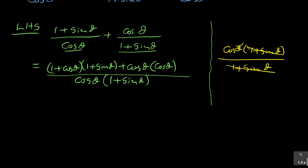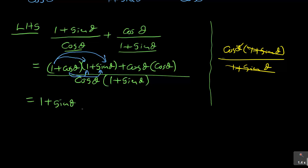You continue to simplify by opening the brackets — expanding. The first bracket: 1 × 1 = 1, plus 1 × sin θ = sin θ, plus sin θ × 1 = sin θ, and cos θ × 1 = cos θ.